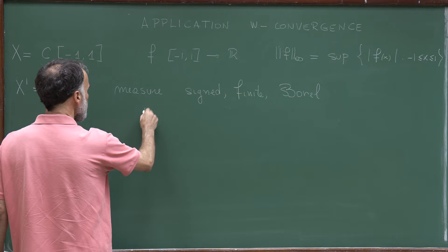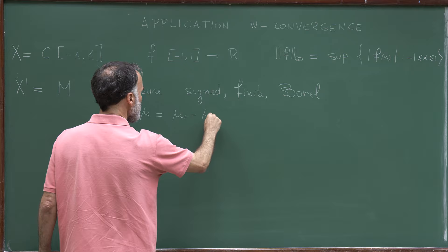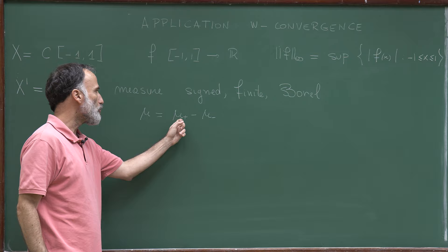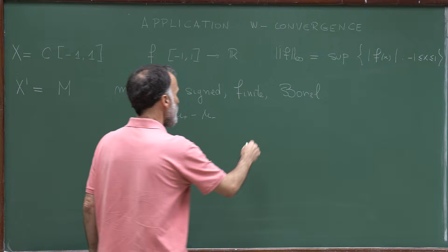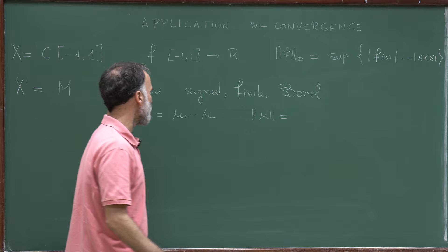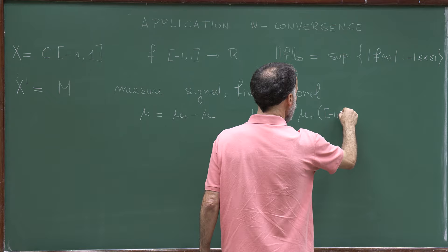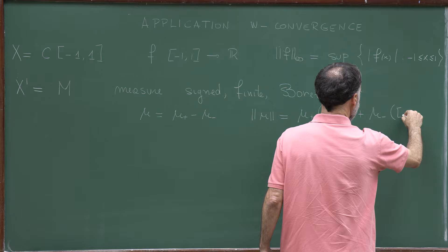From measure theory, a signed measure mu can be decomposed into a positive part and a negative part: any signed measure equals a positive measure minus a non-negative measure. The norm of mu is given by the total variation, which is mu-plus of [-1,1] plus mu-minus of [-1,1].